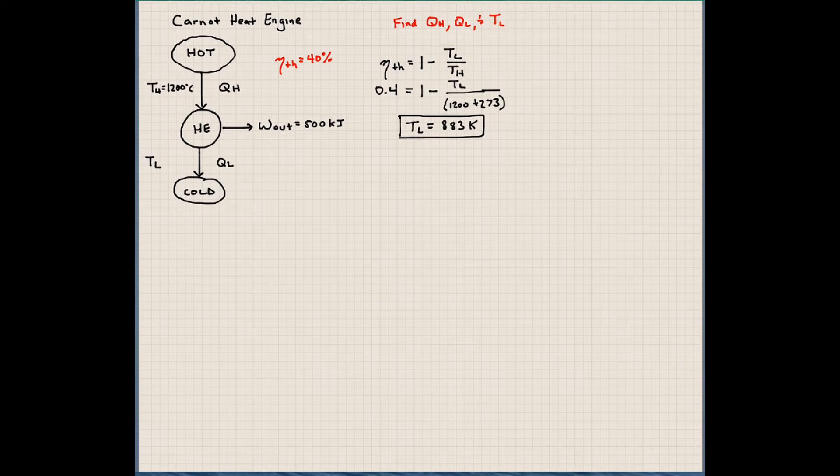Next thing we can do is we can use our definition of thermal efficiency again. And these are all equivalent forms of thermal efficiency. Our definition of this thermal efficiency is the work output divided by QH. And these are all equivalent to each other, just written in different ways.